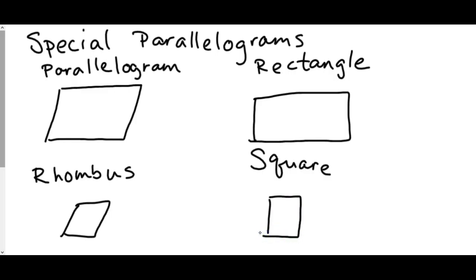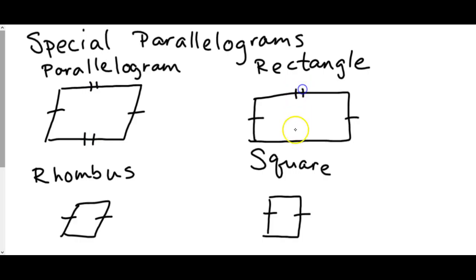There are some characteristics that all four of these share, but there are also some that make the rectangle, rhombus, or square unique. Every one of these is considered to be a parallelogram. All of them have opposite sides that are the same — left and right are the same, top and bottom are the same. With a rhombus and square, they're even more unique because all four sides are the same.